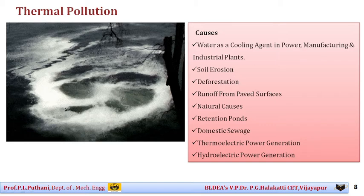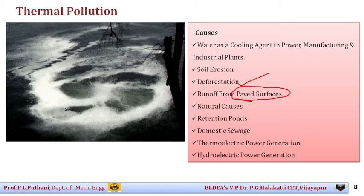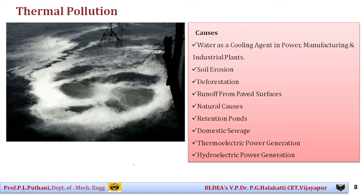Deforestation is also a major cause of thermal pollution. When the number of trees decreases, solar rays fall directly on water bodies, causing a continuous rise in the temperature level of the water, which creates problems for the food chain of the ecosystem. Runoff from paved surfaces — especially in cities where roads are made of concrete material — is another cause. In summer, concrete road temperatures reach very high levels, and when water flows from these roads into water bodies, it changes the temperature and impacts the life cycle of aquatic bodies.